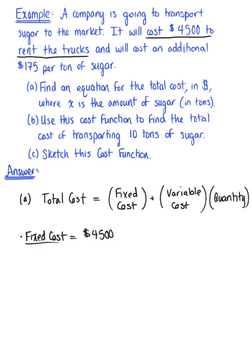Now, looking back at this question, we see that it will cost an additional $175 per ton of sugar. So that's an indicator of the variable cost per unit. So our variable cost here is $175 per ton of sugar.